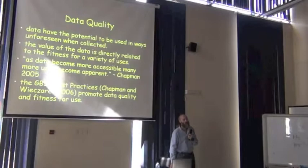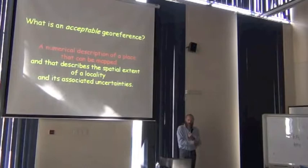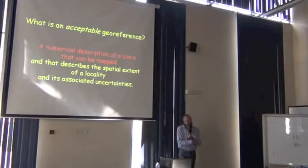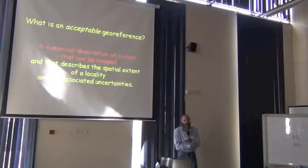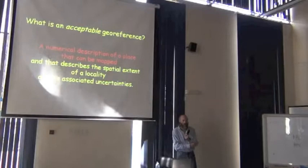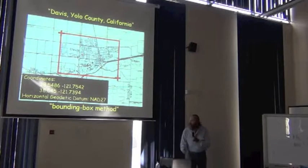The idea here is that georeferencing processes should do as well as we can to add useful information about the uncertainties associated with the descriptive data. I would posit, then, that a new definition of an acceptable georeference is one that not only is a numerical description of a place that can be mapped, but also describes the spatial extent of that place and its associated uncertainties. In other words, it's not just a point — a point doesn't tell me how uncertain it can be. The bounding box is one such way to do that. By capturing two coordinate pairs — latitude and longitude for one end, and latitude and longitude for the other end — we are describing a box.